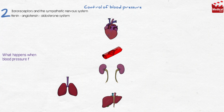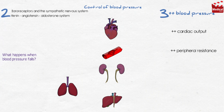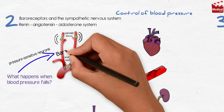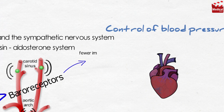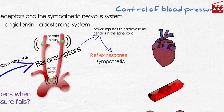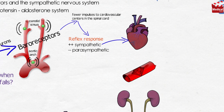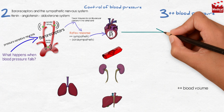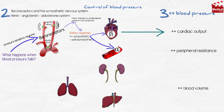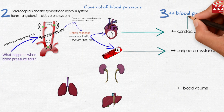So what happens when blood pressure falls? Three processes increase blood pressure: increasing cardiac output, increasing peripheral resistance, or increasing blood volume. A fall in blood pressure causes pressure-sensitive neurons in the aortic arch and carotid sinuses — called baroreceptors — to send fewer impulses to cardiovascular centers in the spinal cord. This prompts a reflex response of increased sympathetic and decreased parasympathetic output to the heart and vasculature, resulting in activation of beta-1 adrenoceptors in the heart, increasing cardiac output, and activation of alpha-1 adrenoceptors in the blood vessels causing vasoconstriction, leading to a compensatory rise in blood pressure.